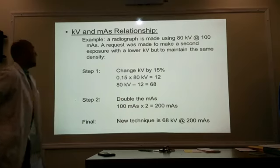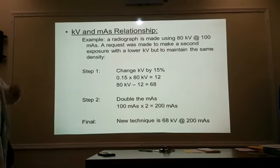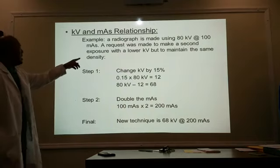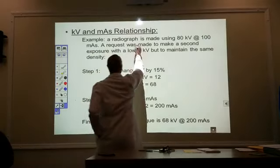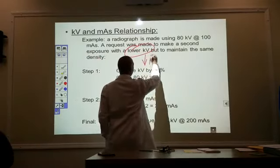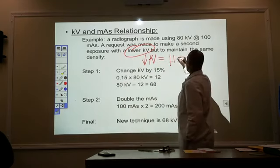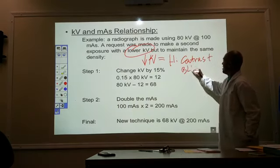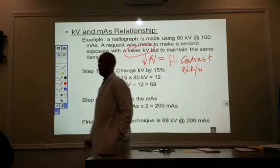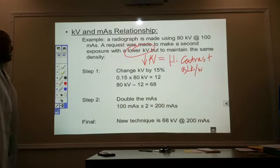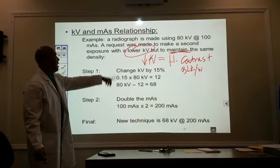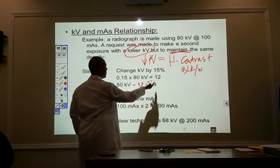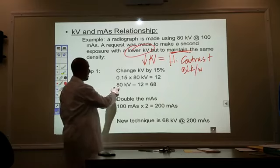Here's an example: a radiograph is made using 80 kV at 100 mAs. The doctor says he wants a second radiograph at lower kV but likes the overall darkness, so let's keep the density. I want to decrease my kV by 15%. 15% of 80 equals 12. So 80 minus 12 gives me 68 kV. What did I do when I decreased my kV by 15%? My overall density went down — it's half the density now.